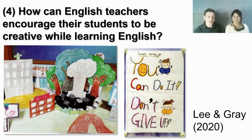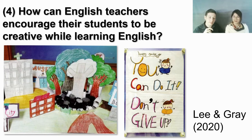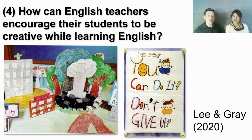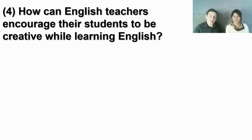We have another example from Roxy's class. This is making an inspirational poster. The target expression was can do, cannot do, do, or don't. The students made this to inspire each other and the next people who would use the classroom, because the posters were put up on the walls. So that's another example of just taking whatever the target language is and encouraging students to make something with it. You can use pre-established activities like rhymes or poems, or you can take whatever language you have and imagine some way that students can create something with it. Whatever your curriculum is, there are creative ways to play with it.